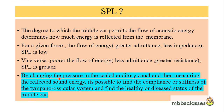By changing the pressure in the sealed auditory canal and measuring the reflected sound energy, it is possible to find the compliance or stiffness of the tympano-ossicular system and determine whether the middle ear is normal or diseased. If the tympano-ossicular system has some resistance to energy flow, the SPL value will be higher — meaning more sound is reflected and there is greater resistance. If sound flows freely, the SPL value will be low, meaning compliance is more and resistance is less.